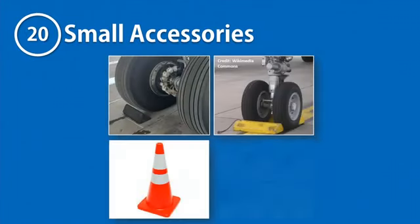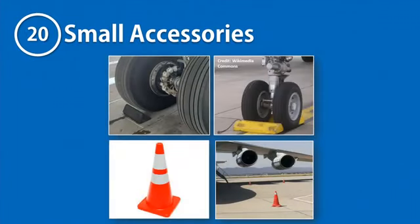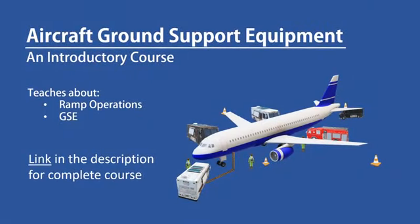Lastly, some small accessories such as safety cones and wheel chocks are also categorized as ground support equipment owing to the important support function they perform in ramp operations. If you would like to learn more about these equipment and their operations, please check the link in the description below for a comprehensive ground support equipment course that explains the basics of aircraft ground handling operations performed on the ramp, with emphasis on the different types of equipment used. Don't forget to like and subscribe, and do tell us in the comment section if you found this video helpful.